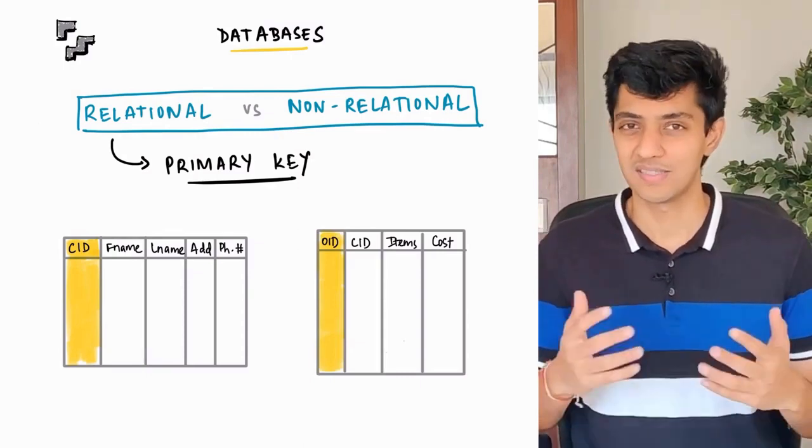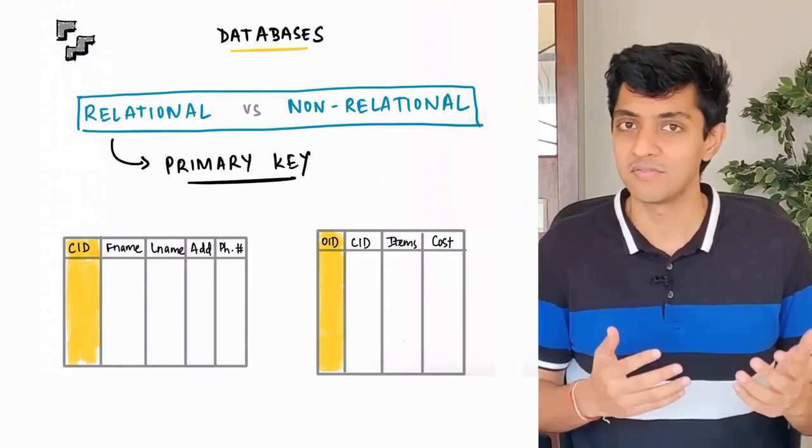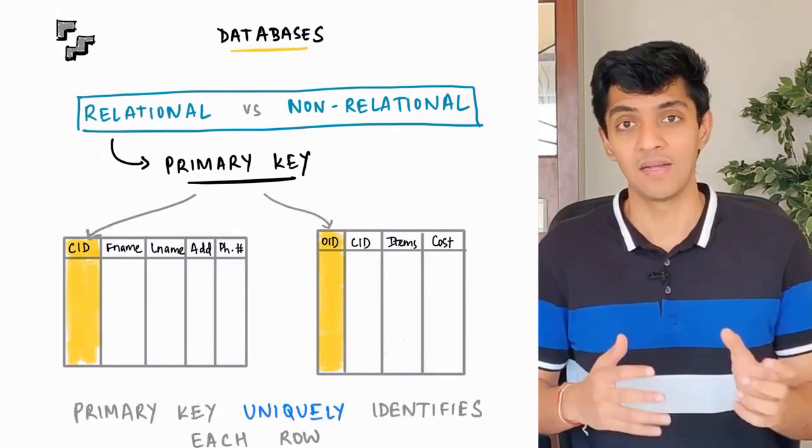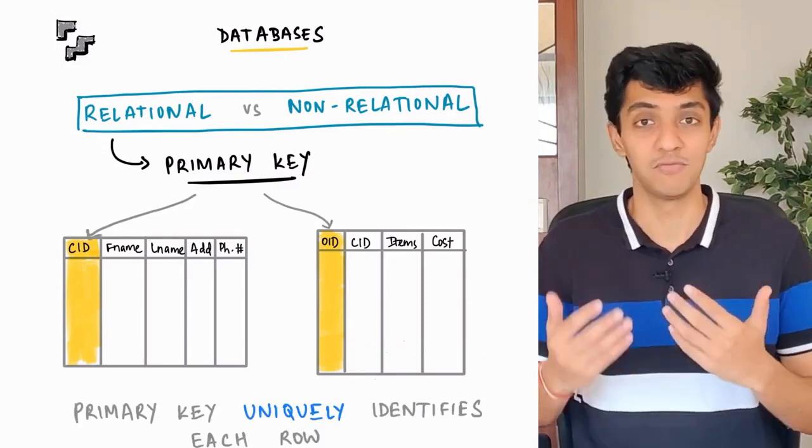For example, imagine you want to extract the customer information for a customer named John. If you didn't have a unique customer ID, and let's say you had two customers by the name John, then you don't really know which information you need to pick.